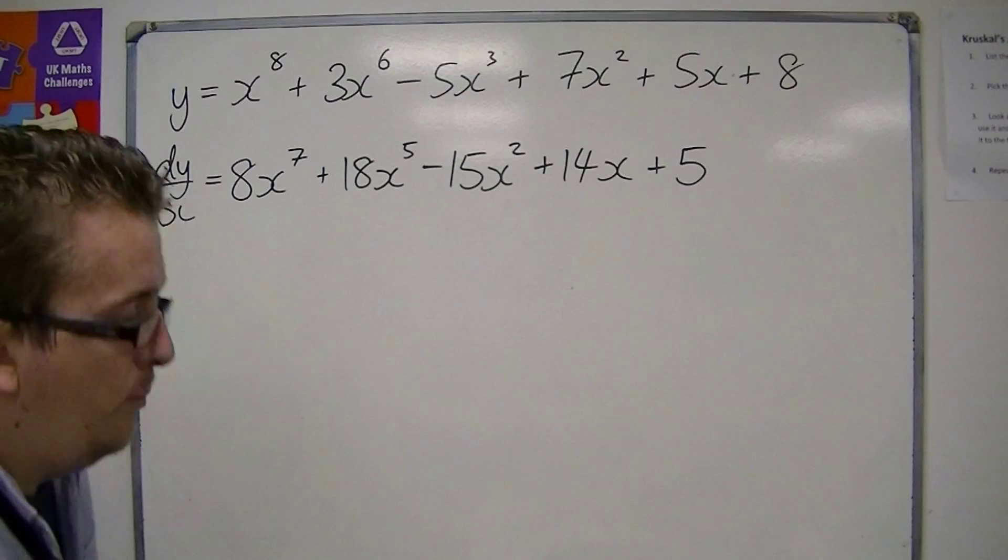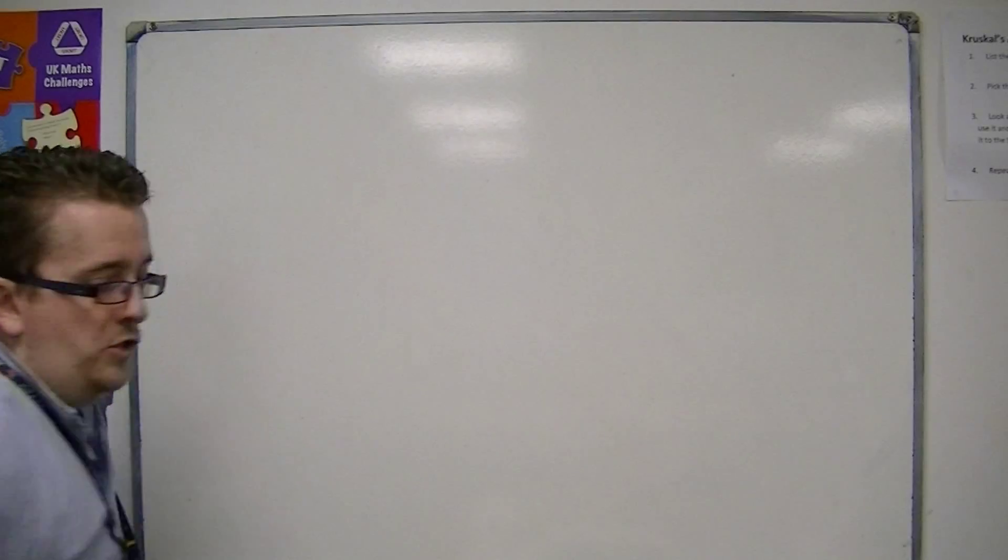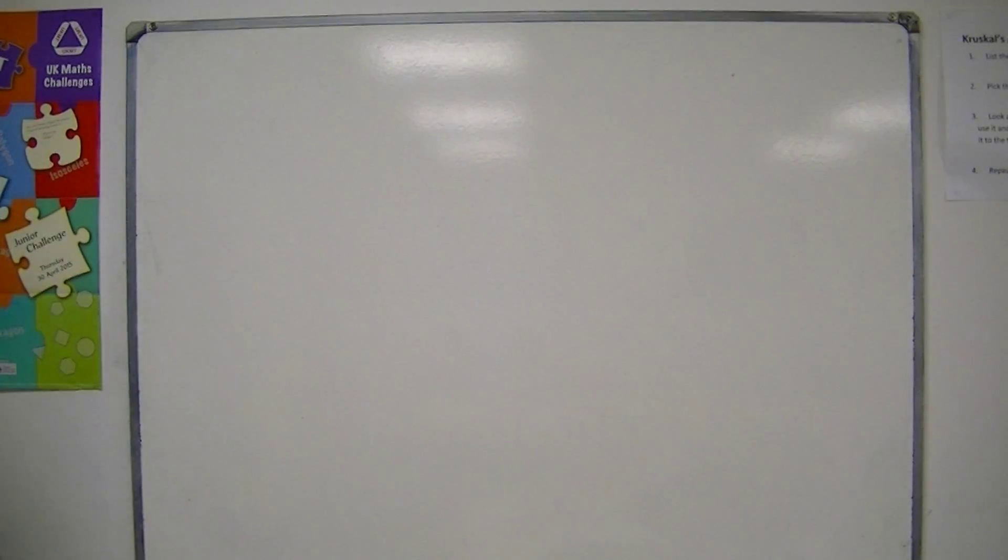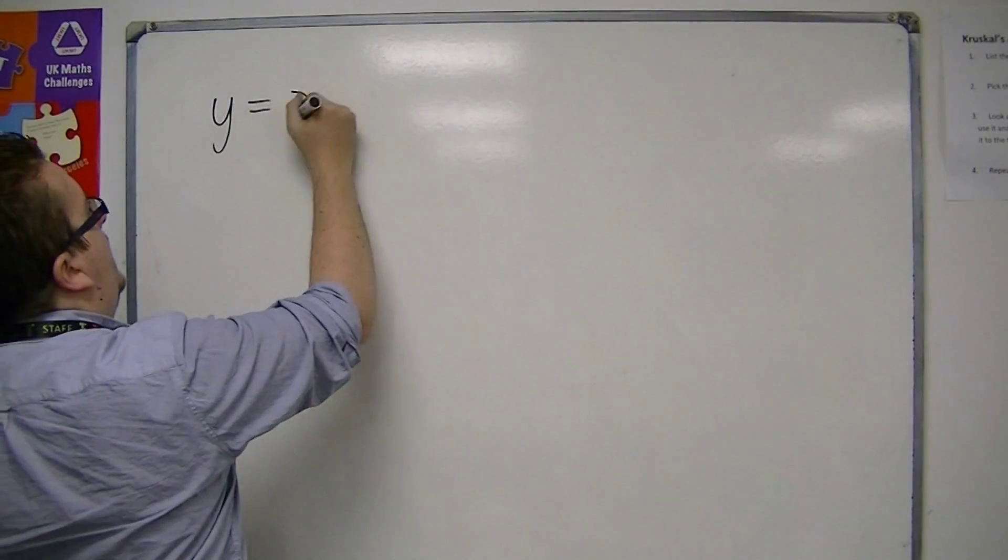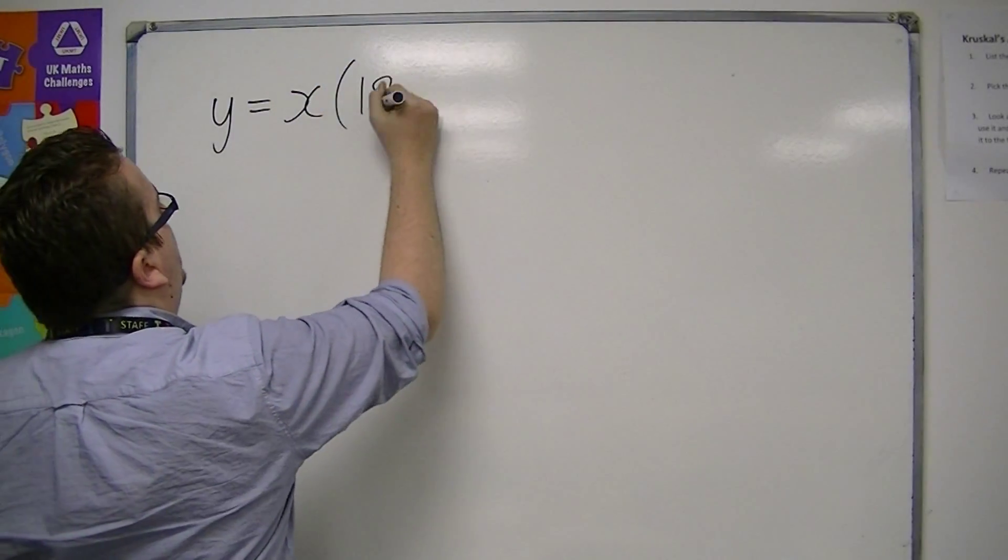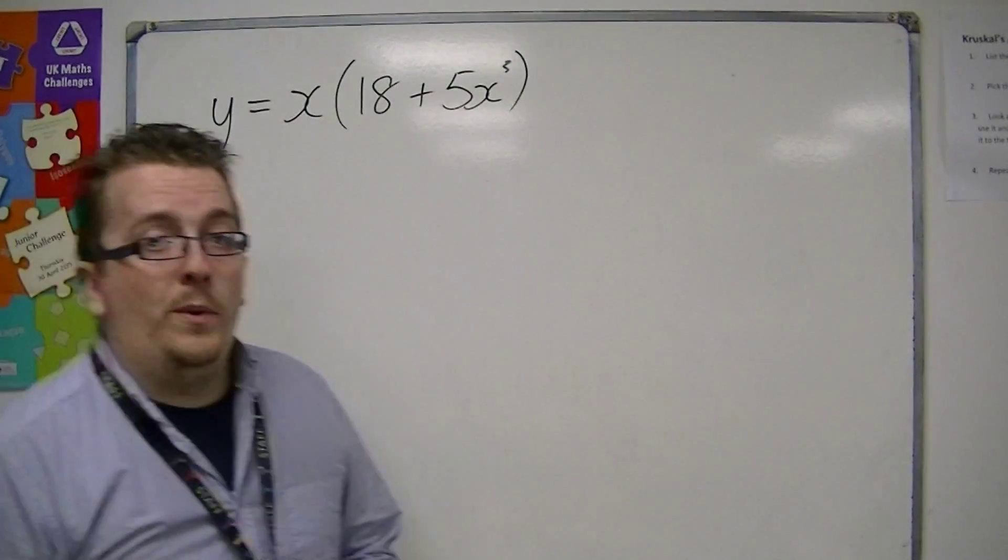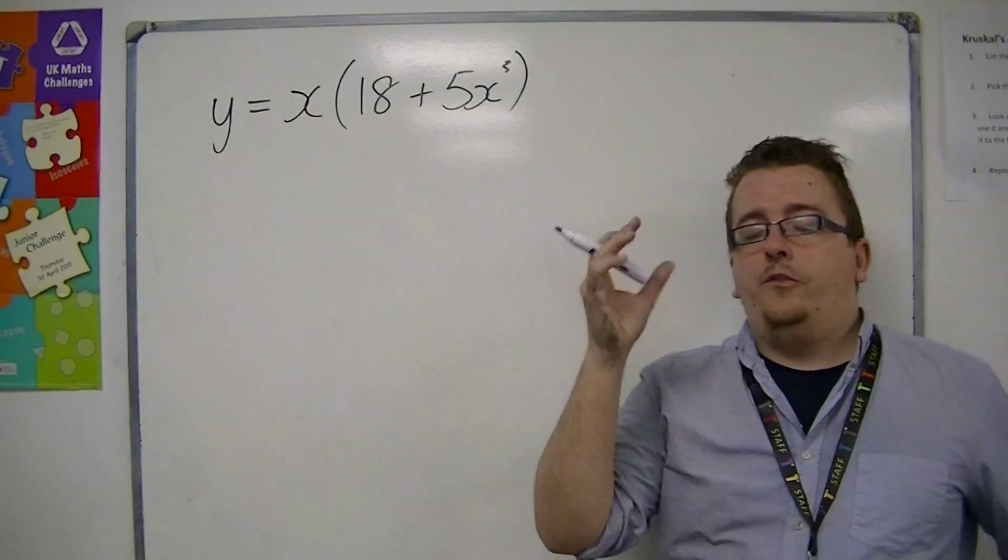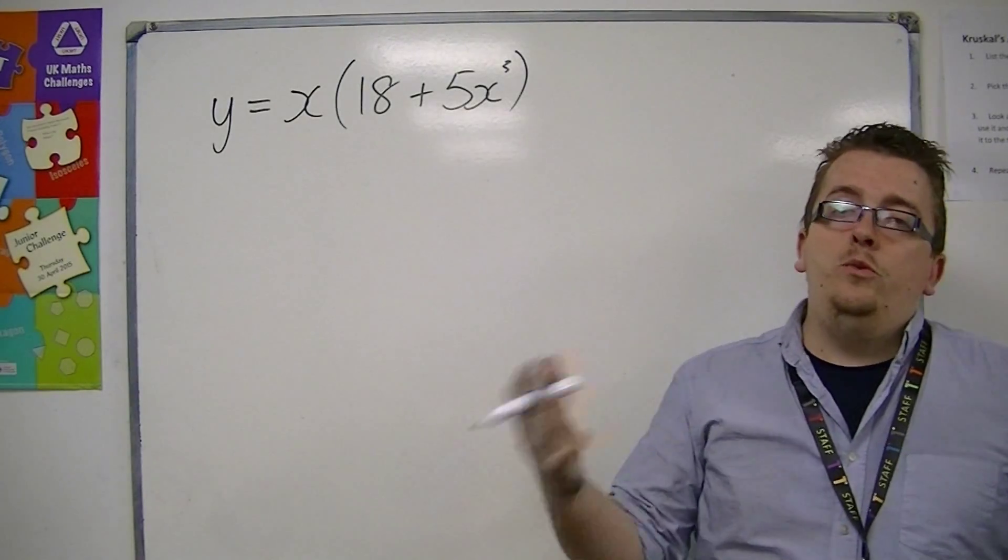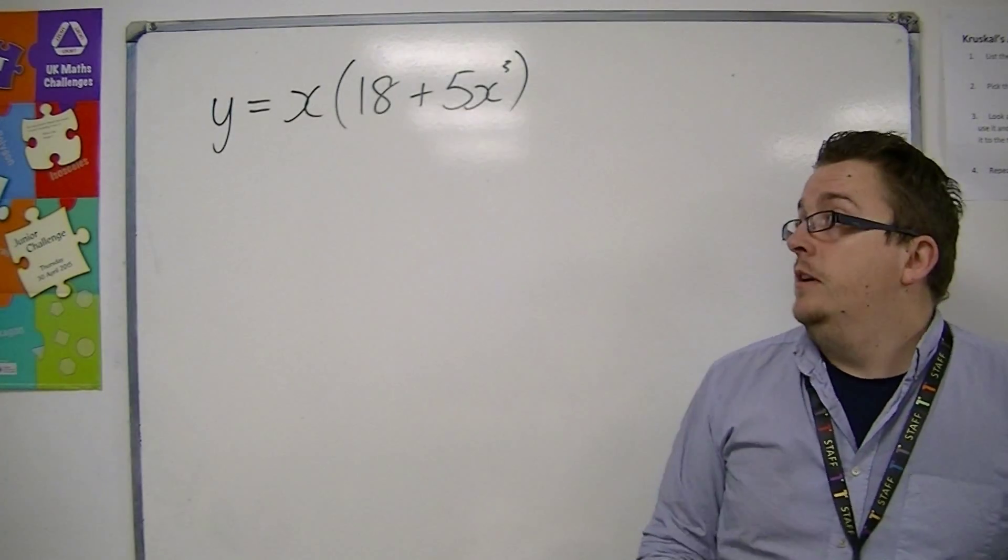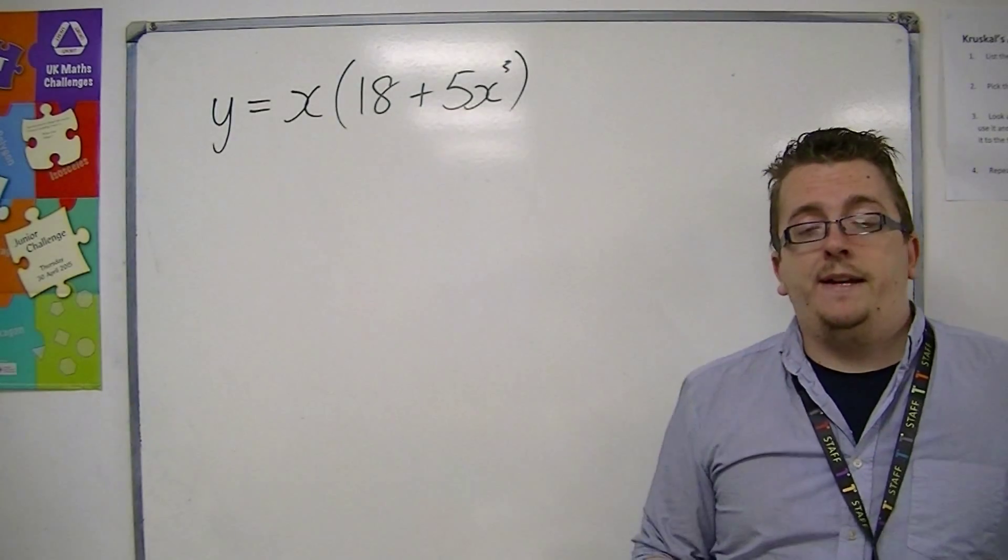So let's see a couple more examples, just so we can see how this would work. Let's say we've got something like y is equal to x times 18 plus 5x cubed. So we had something like this. Now, it is very important that when you are dealing with core 1 differentiation, and you're dealing with something that looks like this, you multiply out the brackets.